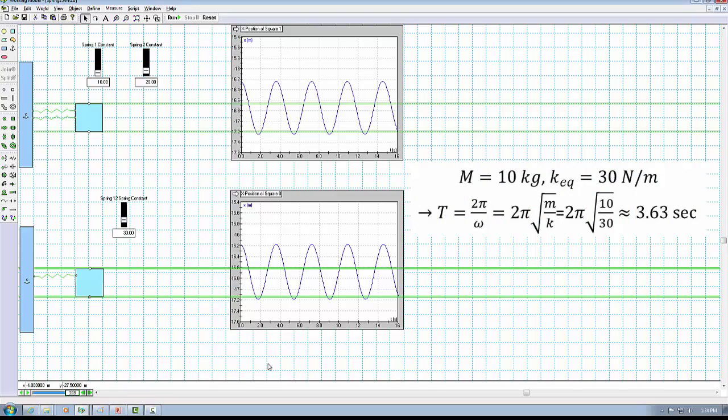With the equation we just derived, the mass is 10 kilogram, equivalent spring constant is 30 newtons per meter. The period of the oscillation should be 3.63 seconds. And you can see from the measurement, the period is about, from peak to peak, about 3.5 seconds. Of course, you can export the data and do a more accurate analysis.